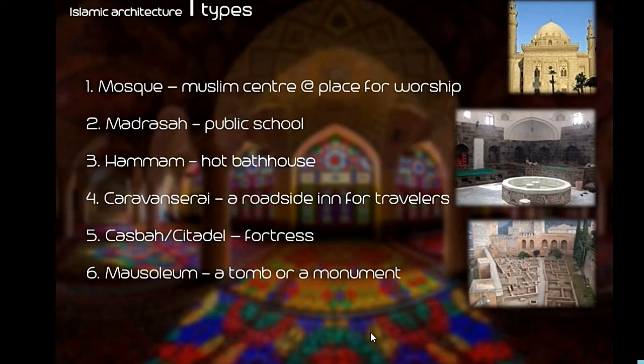Recap on Islamic architecture types: number one, mosque — Muslim center and place of worship; madrasa — public school; hammam — hot bathhouse; caravanserai — a roadside inn for travelers; kasbah or citadel — fortress; mausoleum — a tomb or monument.